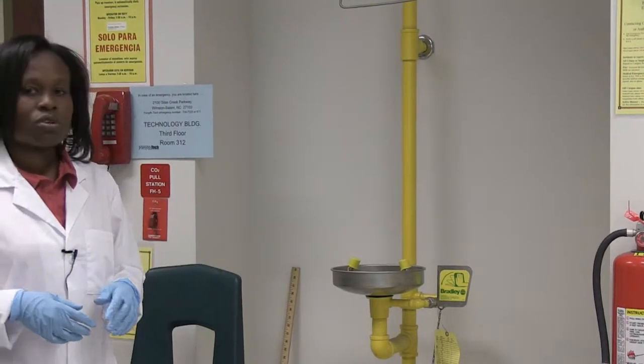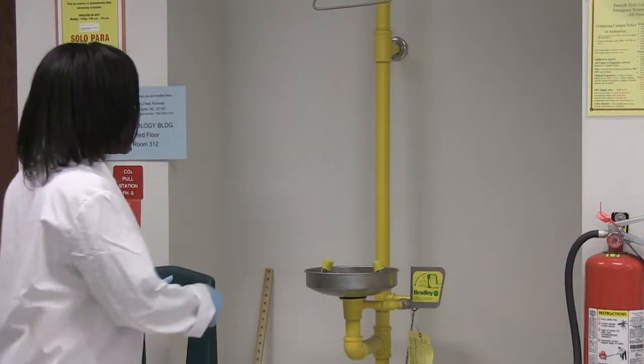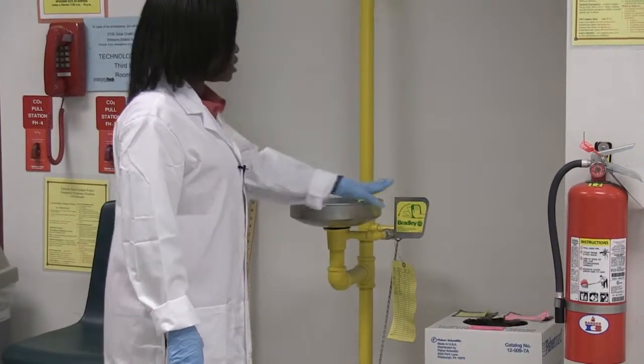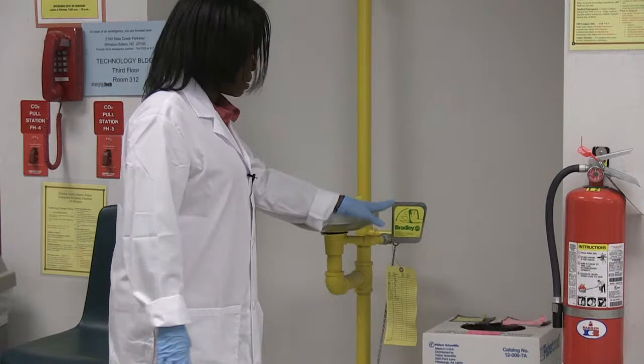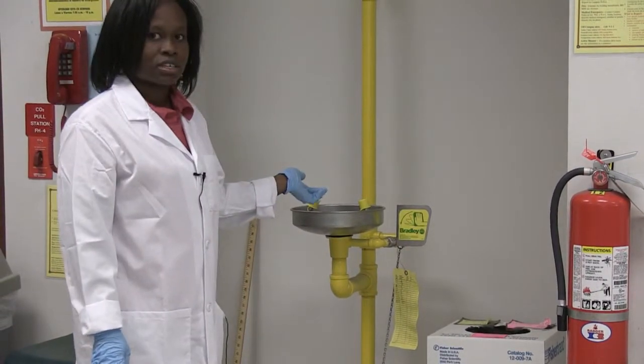If you are working with a chemical and the chemical gets into your eyes, the first thing you want to do is get assistance from either your instructor or a neighbor. Get immediately to this eyewash station and you may have to get your neighbor to press the pedal forward so that the water will come out of the eyewash station.